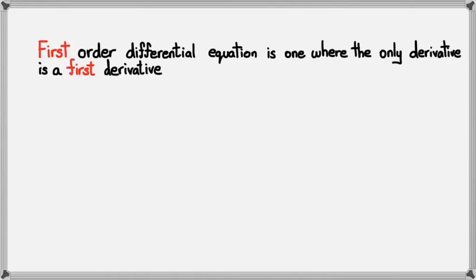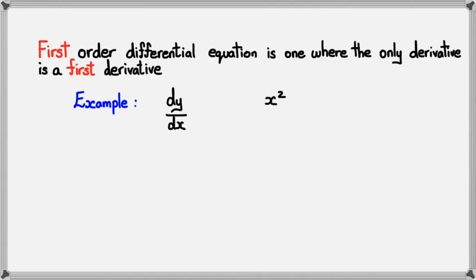A first order differential equation is where the only derivative is a first derivative. For example, dy/dx — that's a first order DE — or something like x squared dy/dx equals 3. That's still a first order differential equation. So first order differential equation means you're going to have dy/dx.